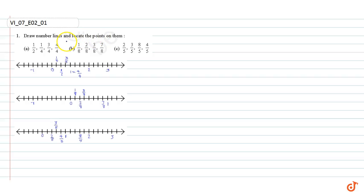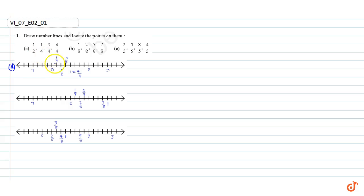In this question, we have to draw number lines and locate the points on them. In part A, we have drawn a number line and divided the gap between 0 and 1 into 4 equal parts. 1 by 2 represents the midpoint of the gap between 0 and 1.